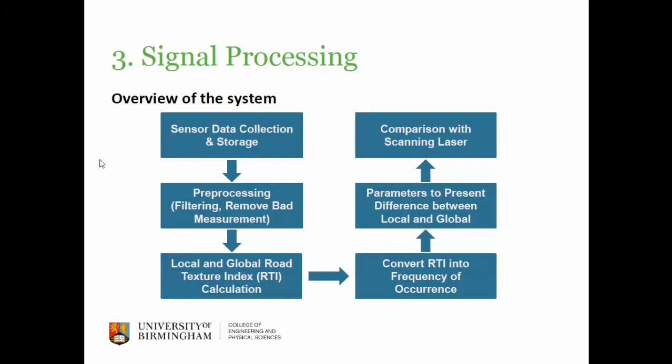Here is the signal processing part of the system. First we have sensor data collection — this is done by an industrial partner who drives the car on the road in the UK and passes the data to us. Then we design all the processing in the main lab, and we have some pre-processing where we filter out sensor errors, because these laser sensors are really sensitive and can easily produce bad measurements.